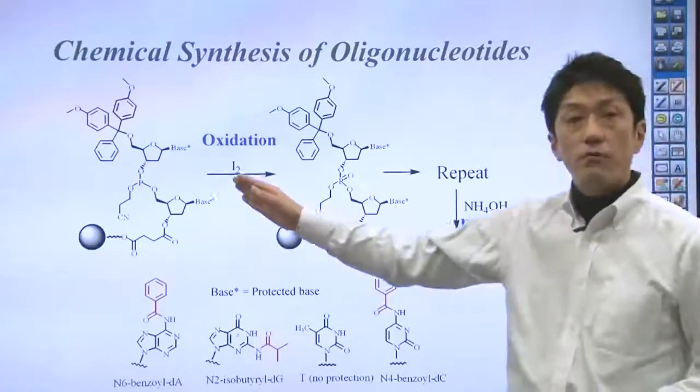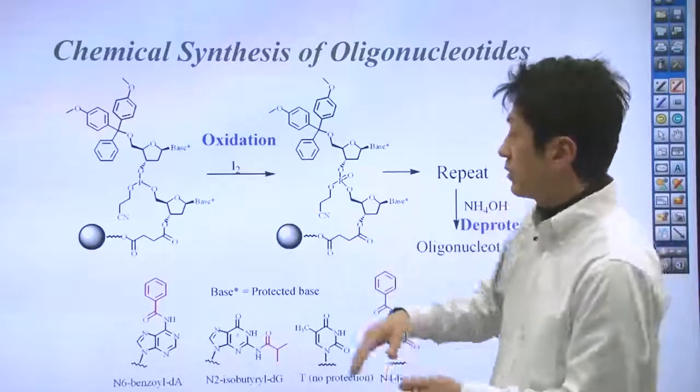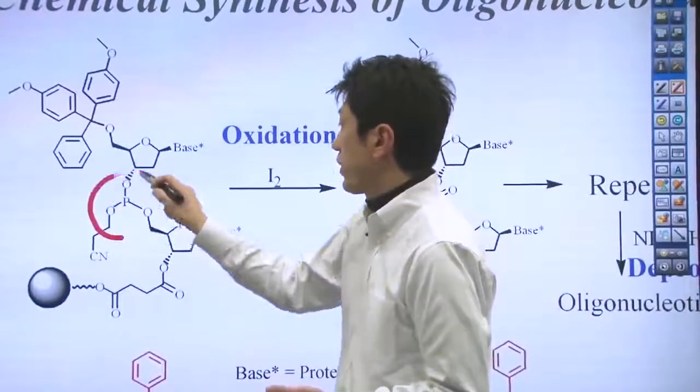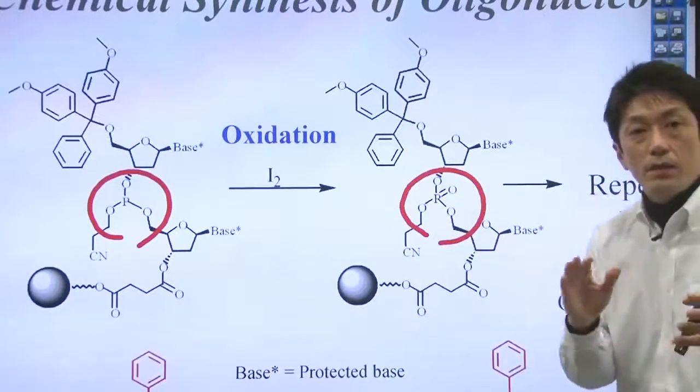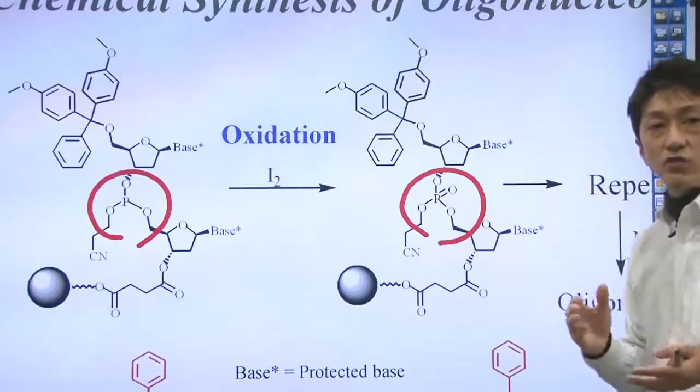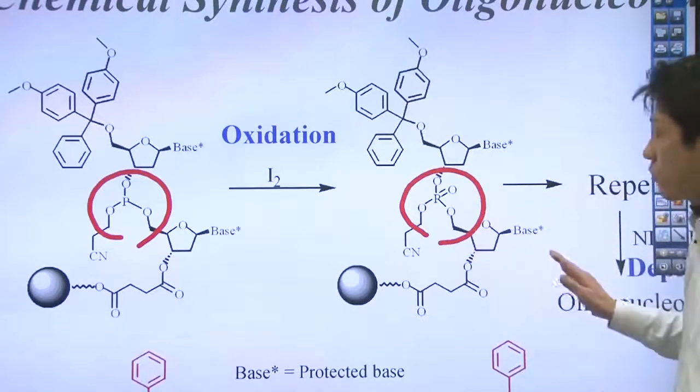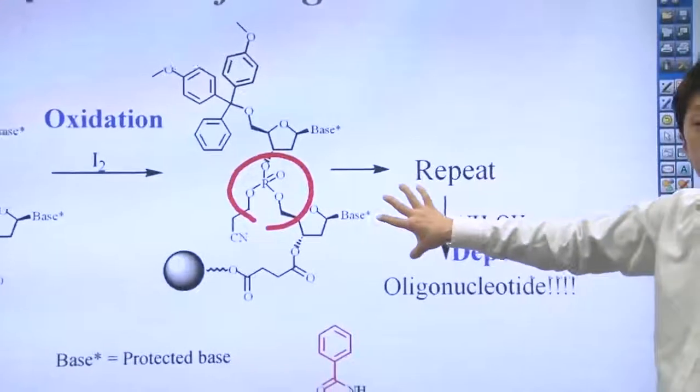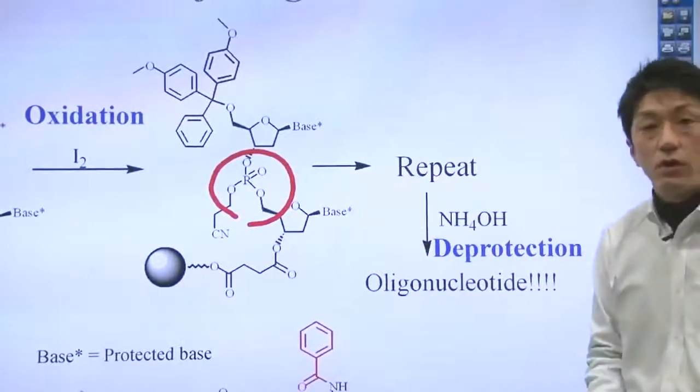The oxidation of the phosphate components completes the addition of one DNA component right here. So, if you look at the structure, this is not really a phosphate. The oxidation can give you the real phosphate group. In the series of reactions, the beads are rinsed and filtered every time a single reaction is completed, to remove any non-reactive components. These steps eliminates the need to purify the desired product. So, this is an excellent feature of solid-phase synthesis.